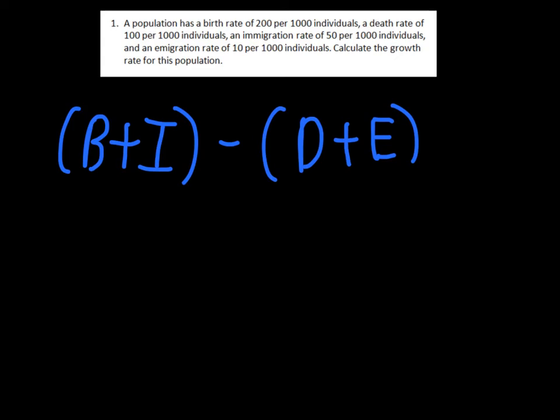To start off, it says a population has a birth rate of 200 per 1,000 individuals. One of the keys to doing this is just writing down information as you find it. Instead of getting overwhelmed by reading the whole problem, and there's all these numbers in here, just stick with what you're finding first. We know that the birth rate is 200, and it's always going to tell you per how many. So this part's going to stay the same. The next one is 100 per 1,000 individuals. So our birth rate is 200, so we're going to write that one down here below the birth rate. We've got 200 to start us off.